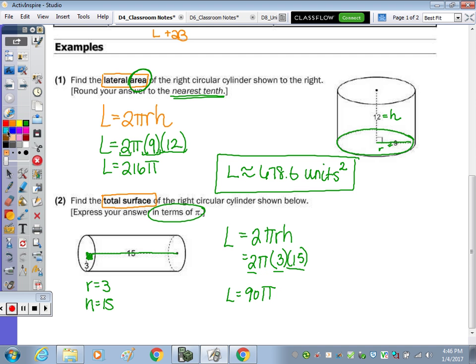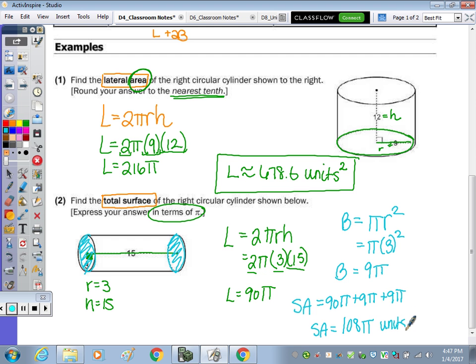So I have that curved surface going around. Now I need the two bases, the two circles. So our base area is the area of a circle, which is πr². So it's going to be π times 3², 9π. So that's our base area. So my total surface area is going to be 90π, plus 9π, plus 9π. Or you could have done 2 times 9π, which is 18π. So adding all that together, treating the π as if it was an x, 90 plus 9 plus 9 is 108, leaving the π so units squared. Again, because we're looking at area. So whether you have to find the total surface area or lateral area, you need that formula from your reference sheet.